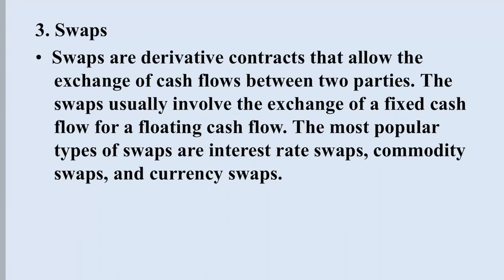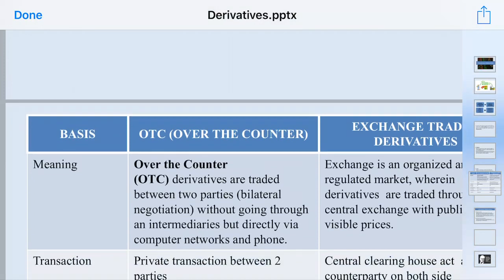Swaps — the literal meaning is exchange. Here, we are exchanging something with someone. For example, a bank has fixed interest rates and floating interest rates. If a company's requirement is fixed but its assets are on floating rates, it can swap this leg of cash flow with someone else on a future date. Swaps are derivative contracts that allow the exchange of cash flows between two parties. The most popular types are interest rate swaps, commodity swaps, and currency swaps.